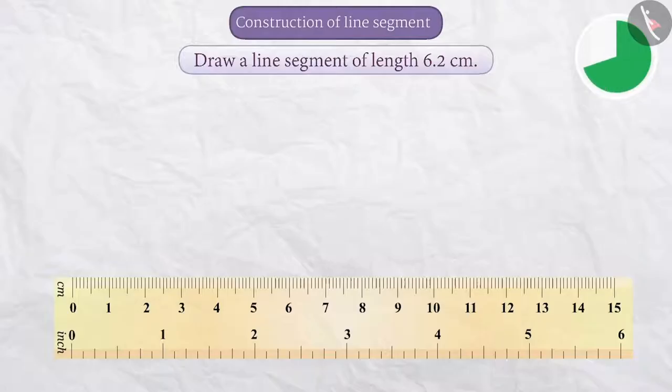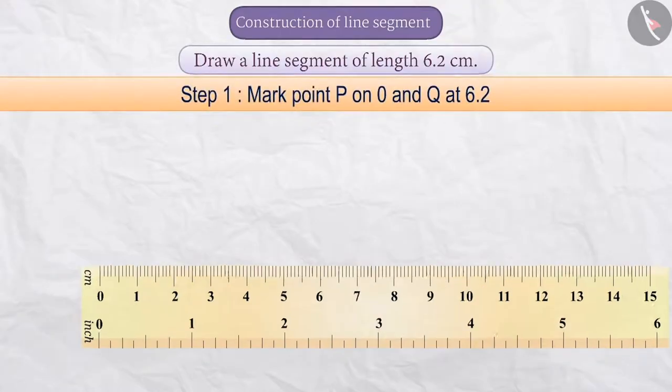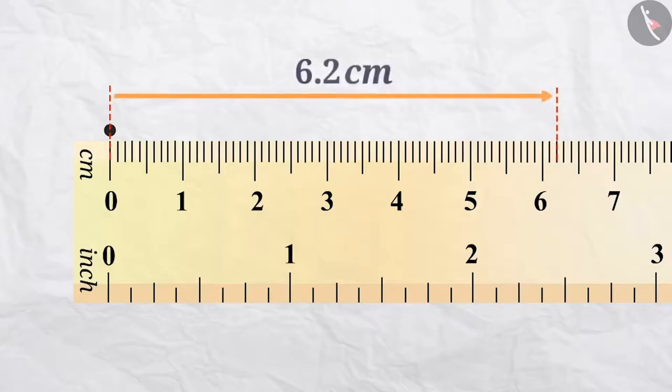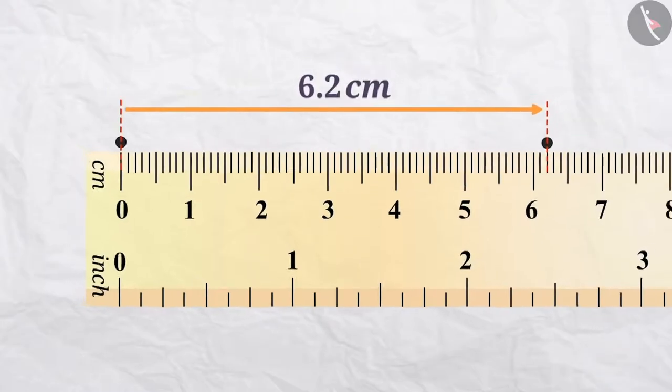Sure, we can draw it. Step 1: We will place a ruler on the paper and mark one point on 0 and another point on the point showing distance of 6.2 cm and name these points P and Q.